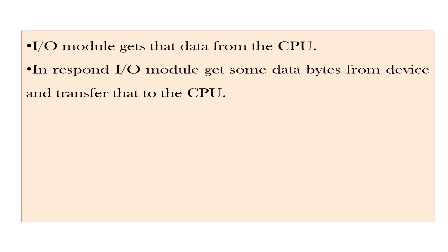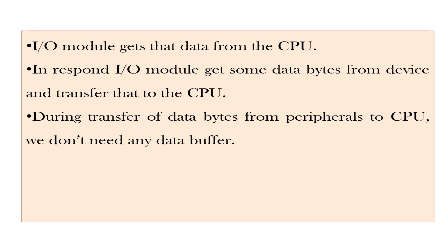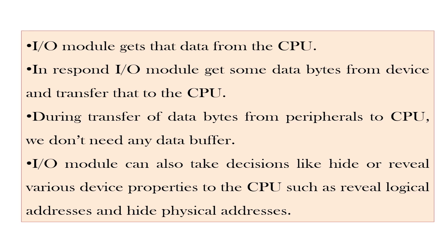In response, the input-output model gets some data bytes from the device and transfers them to the CPU. During transfer of data bytes from peripherals to CPU, no data buffer is needed because the CPU's speed to accept data bytes is much higher than the speed at which devices send data. The input-output model can also make decisions like hiding or revealing various device properties to the CPU — for example, only logical addresses are known to the CPU while physical addresses are hidden. It also supports multiple devices of the same kind, such as when a projector is connected, giving the system two output devices of the same type.